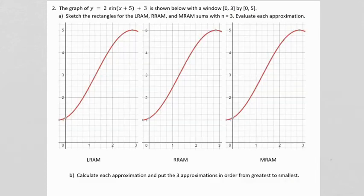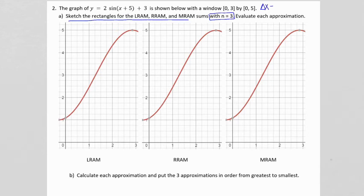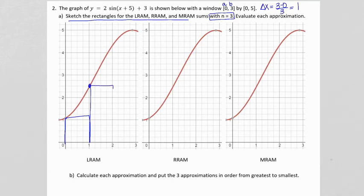Let's do one more. The graph of y equals 2 sine of x plus 5, close parentheses, plus 3 is shown below. Again, we're looking from 0 to 3 on x and 0 to 5 on y. We want to sketch the rectangles for LRAM, RRAM, and MRAM with N equals 3. Delta x equals B minus A divided by N, which is 3 minus 0 divided by 3, giving us 1. So an LRAM uses the left side to create rectangles — I sketch the LRAM using the y values on the left.